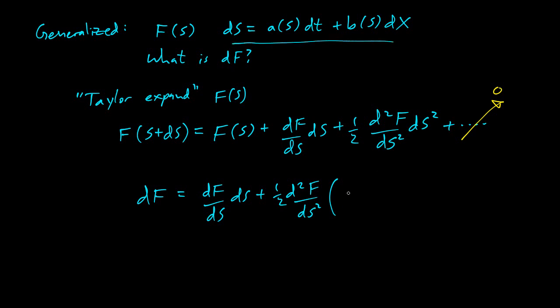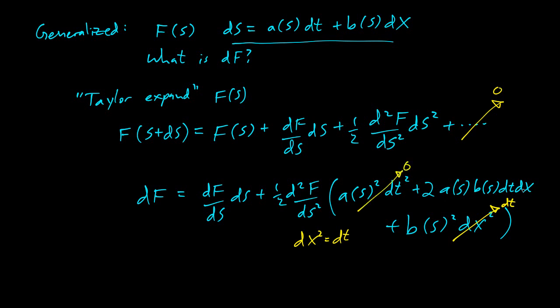Now we can multiply out this formula. ds times ds is a² dt² plus 2ab dt dx plus b² dx². dx squared will go to dt by our formula. dt squared is much smaller than dt, so this goes to zero and can be ignored. dt dx is smaller than dx dx, so smaller than dt, this can also be ignored and goes to zero.